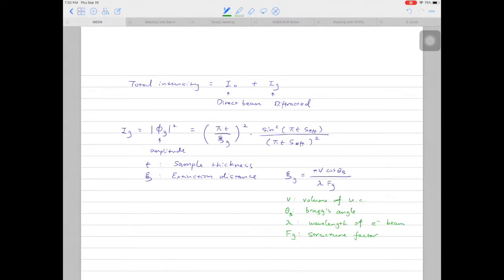Let's just take a minute and try to understand this equation here. So what this equation tells us is the extinction distance for the selected reflection g depends on the volume of the unit cell of the crystal v, the angle of the Bragg reflection theta b, the wavelength of the electron beam lambda, and the structure factor fg for the selected reflection g.